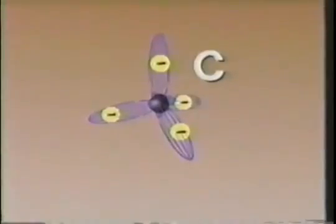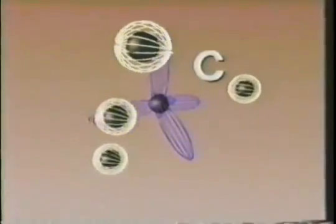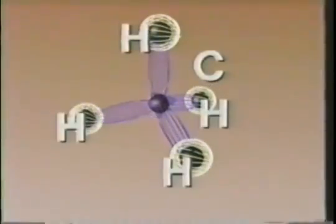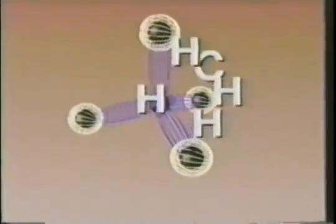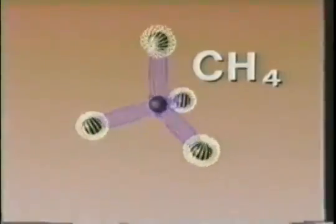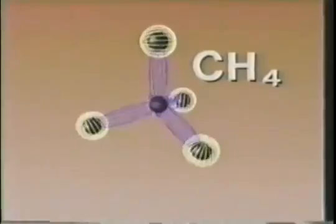Now, to continue. Since each sp3 orbital contains only one electron, it can accommodate one more electron in a covalent bonding arrangement. And hydrogen, with an eager electron in its 1s orbital, is a good candidate with which to share electrons. Hydrogen orbitals can hardly resist overlapping with carbon's orbitals to form methane, a stable molecule with four covalent bonds.